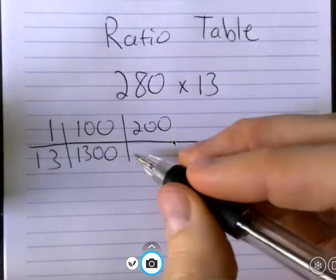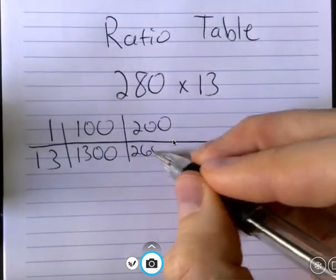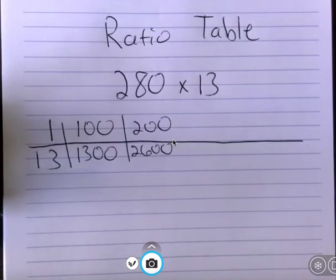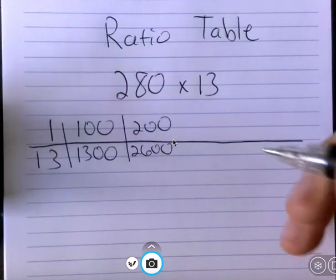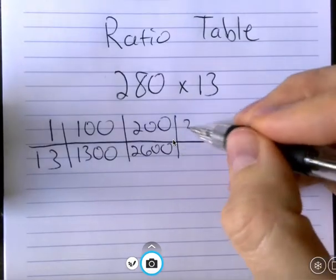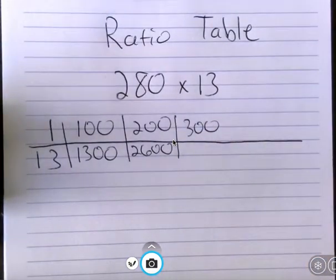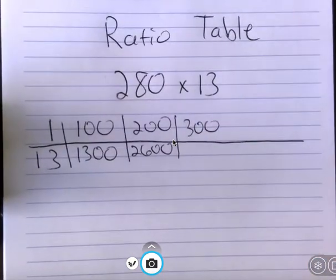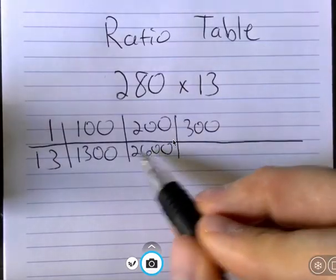And then I'm actually going to go past my answer and I'll explain why in a moment. I'm going to figure out what 300 times 13 is, and well that would just be adding these two numbers here, so that would be 3900.